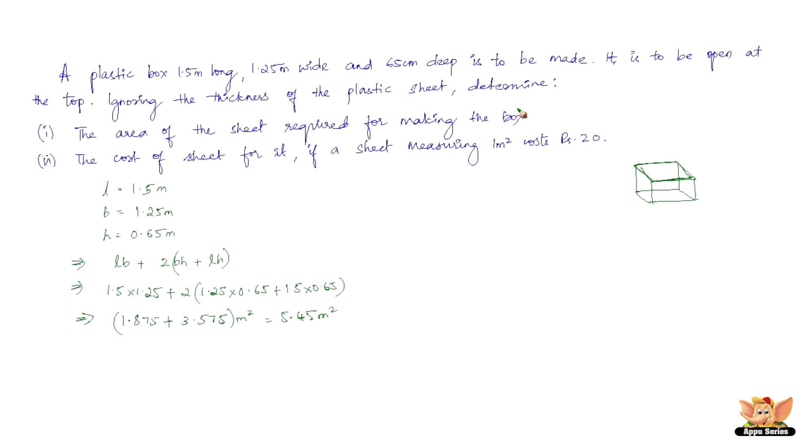So, all we need to do is, we need to read the question they have given. The box is to be open at the top. So, we need to just exclude this portion from calculating the surface area. So, we need to leave that. Therefore, we get 5.45 meters square. So, the total area of the sheet required for making the box is 5.45 meters square.